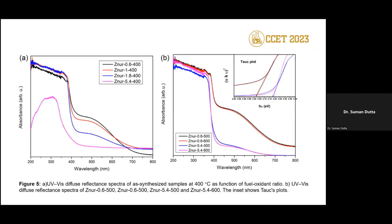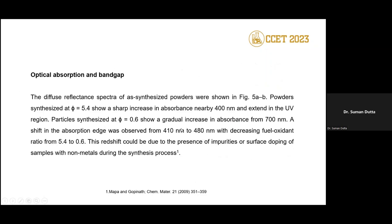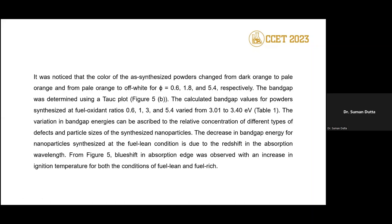UV-Vis spectra show that the absorption edge shifts between approximately 410 and 480 nm as the phi value changes from 5.4 (fuel-rich) to 0.6 (fuel-lean). Thus, decreasing the phi value causes a shift in the absorption value. The calculated band gap (in eV) values are tabulated in Table 1.